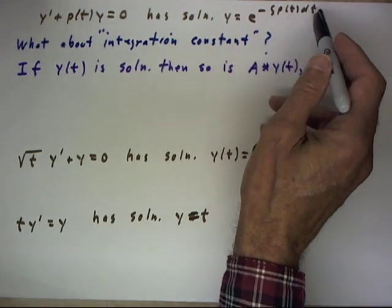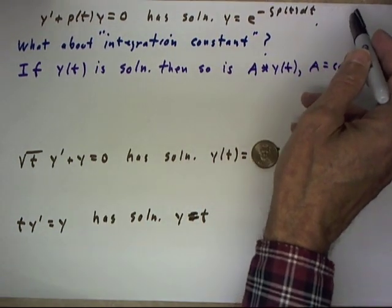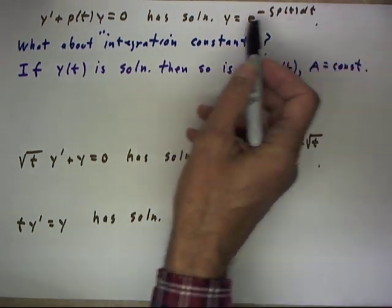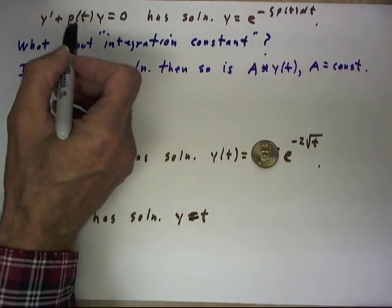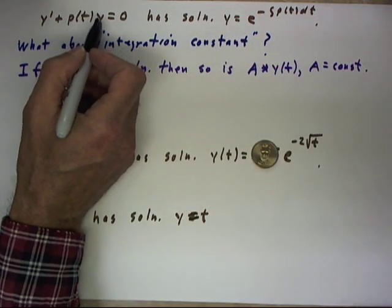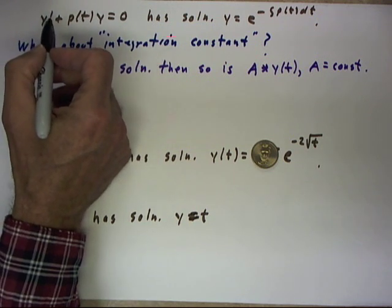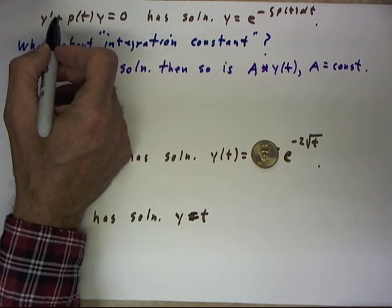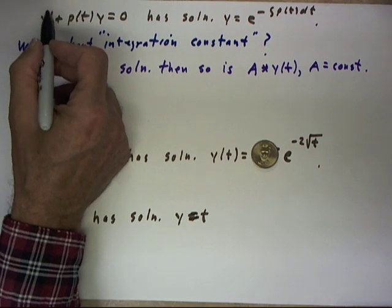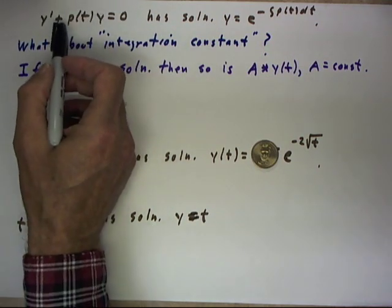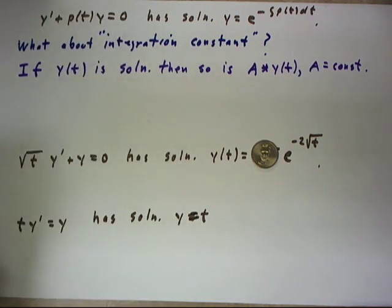Would it be y = e^(-∫p(t)dt) + c? Well, that wouldn't work. If you added a constant onto this, the constant would appear on the y term, but on the y' term, the constant would become zero when you take the derivative, and the equation would not be solved.